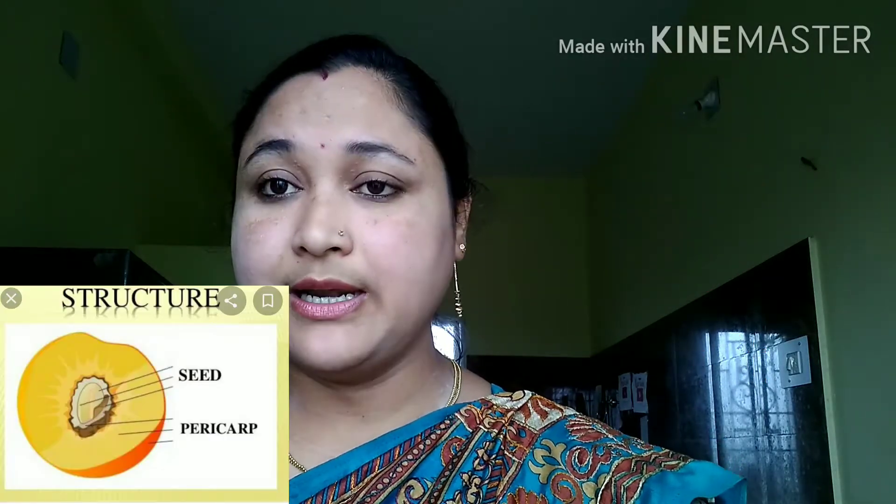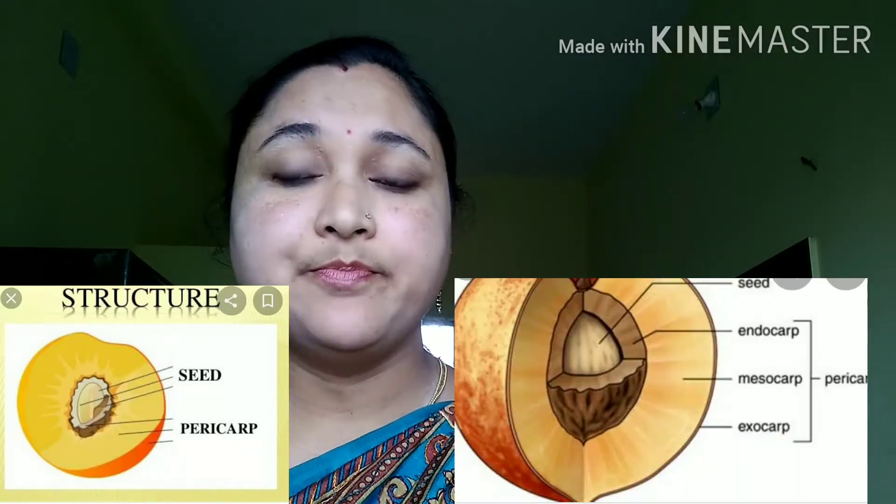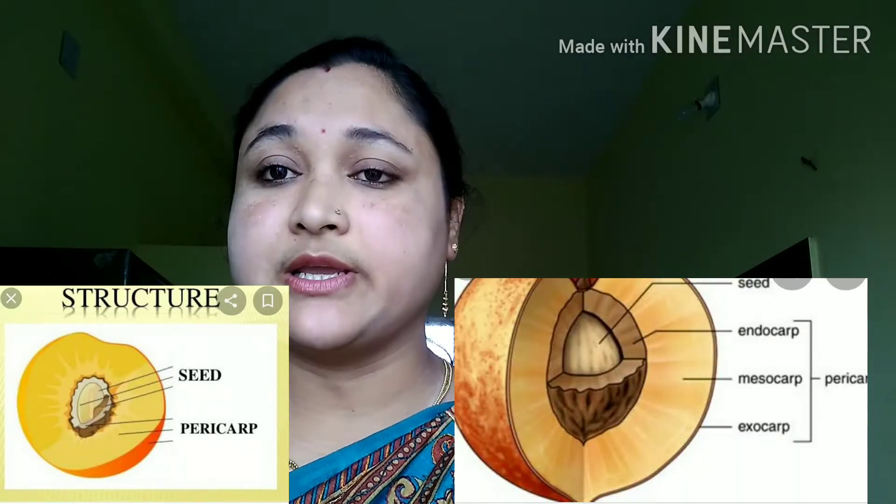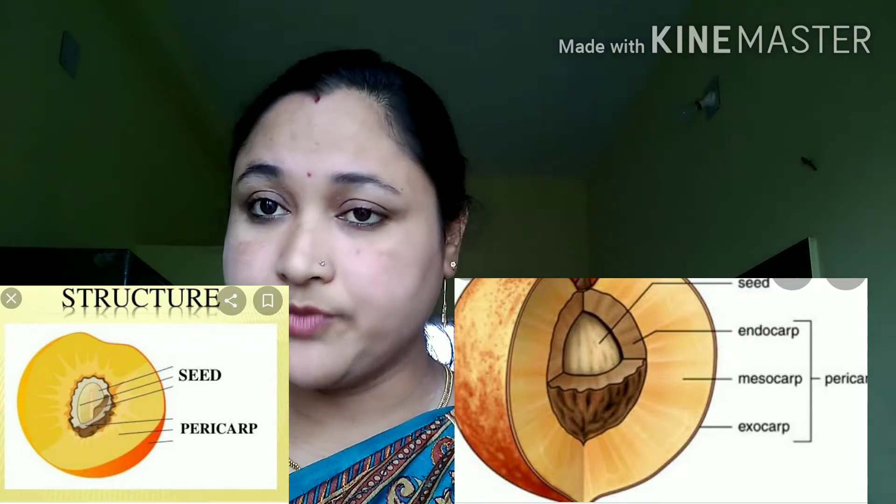Now let's understand the typical structure of a fruit. The fruit has two distinct parts: the pericarp, which develops from the ovary wall, and the seed. The pericarp has three parts, the first being the epicarp, which is the outermost covering of the fruit.